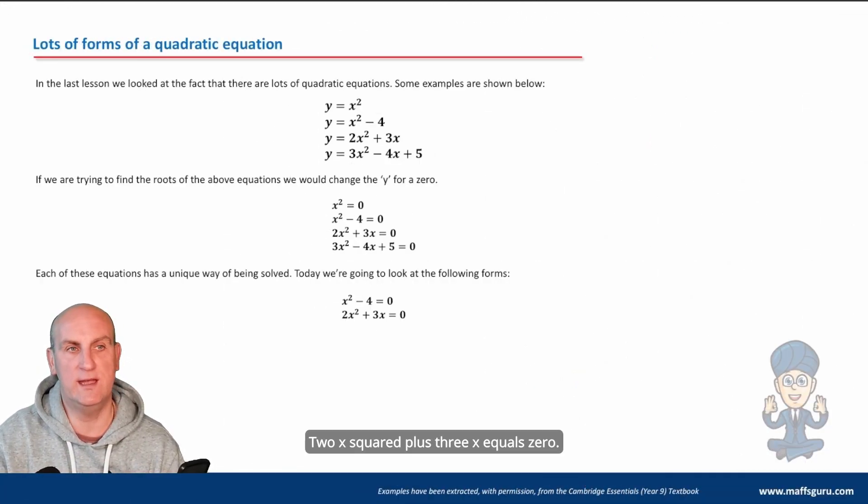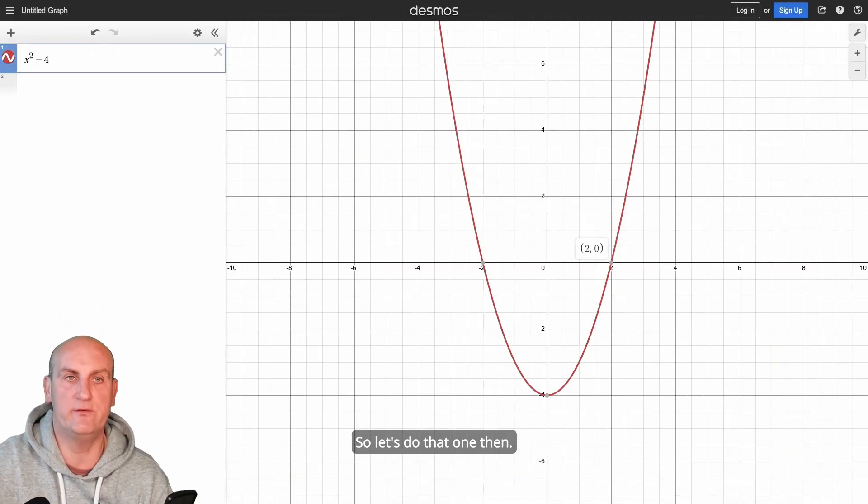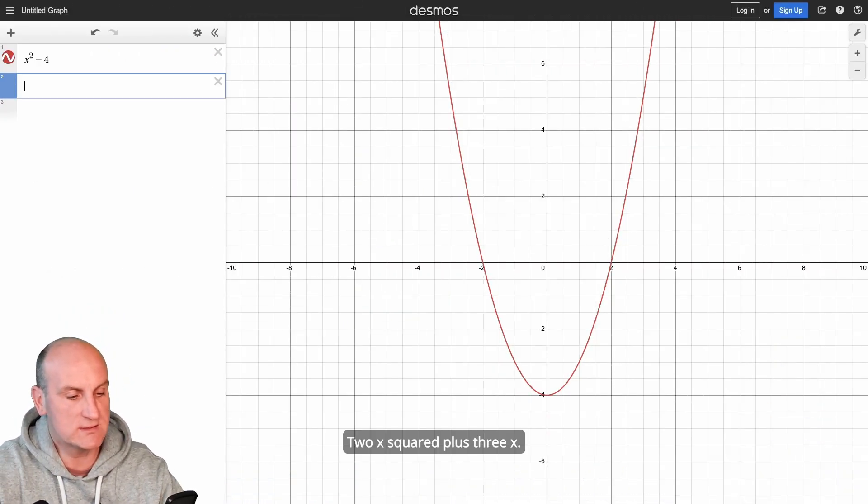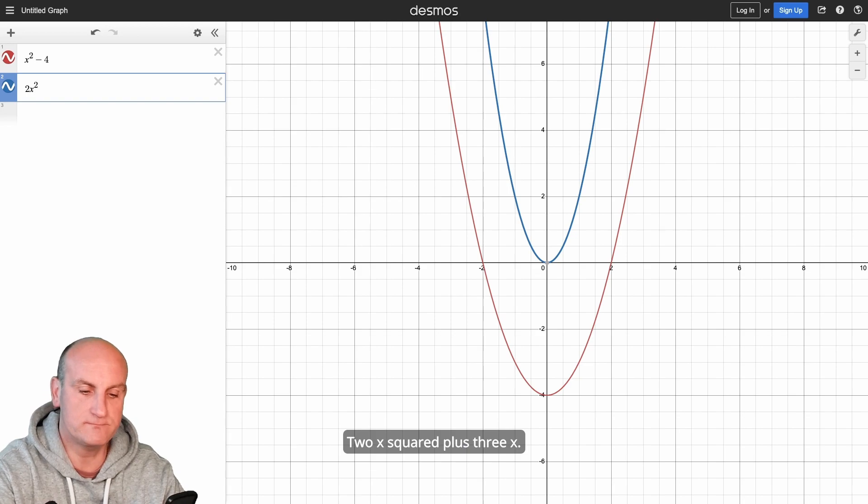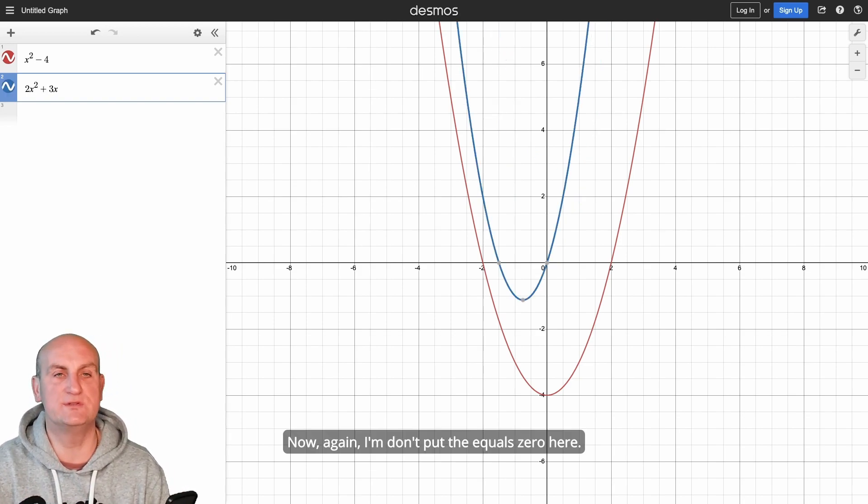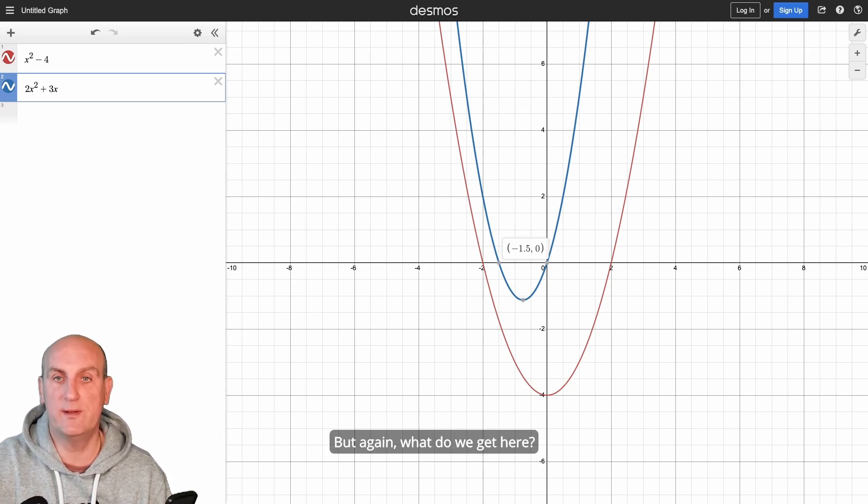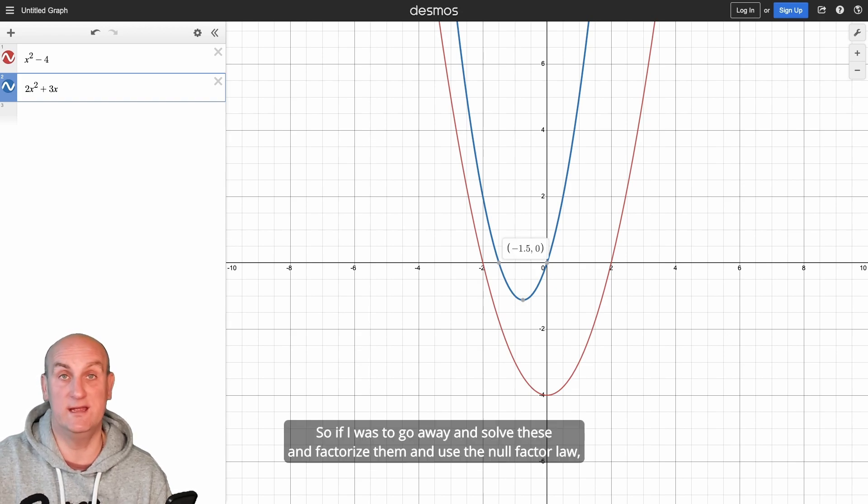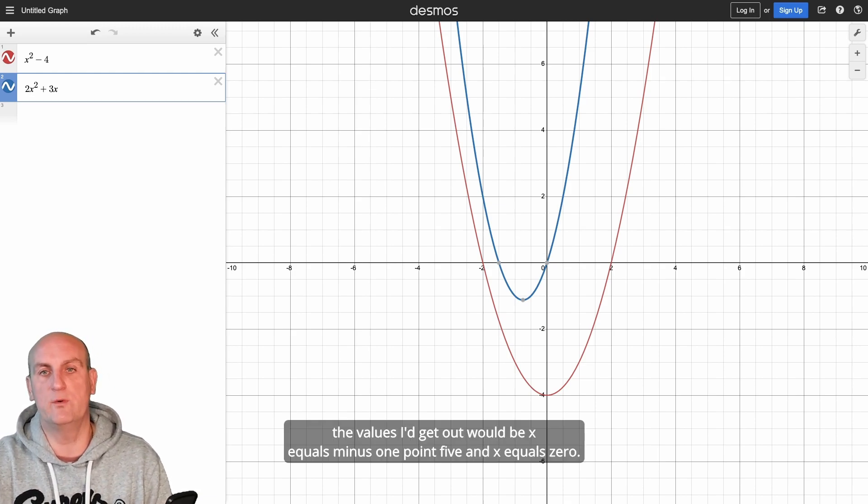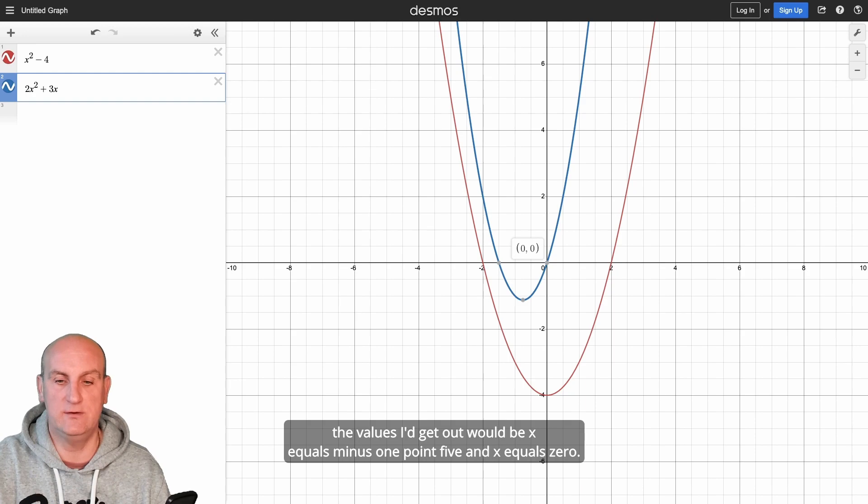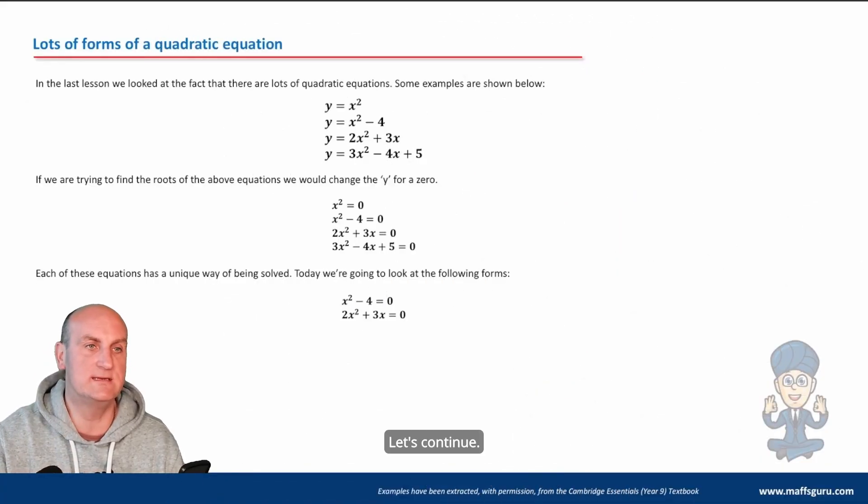What was another one? Two x squared plus three x equals zero. So let's do that one. So what do we got? Two x squared plus three x. Now, again, I don't put the equal zero here. I don't need to. That equals zero is just asking for the crossing points. But again, what do we get here? We got minus one and a half and zero. So if I was to go away and solve these and factorize them and use the null factor law, the values I'd get out would be x equals minus one point five and x equals zero. Let's continue.